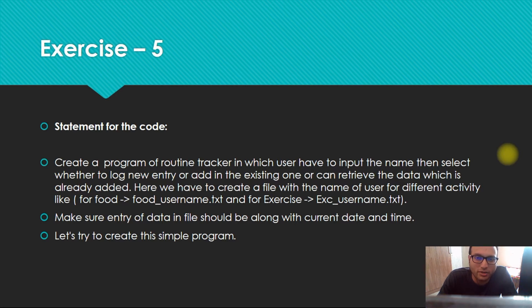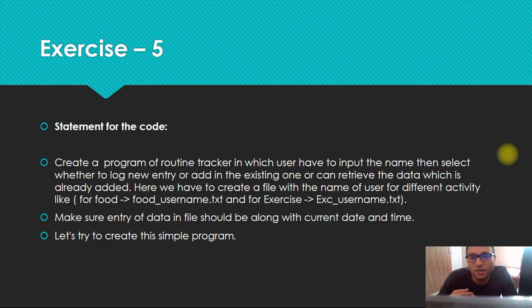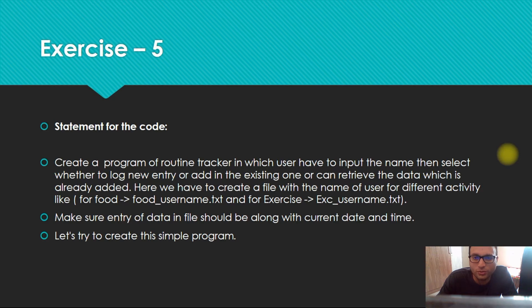Once the person puts in that entry and clicks enter, it's automatically saved in a txt file in the same directory where the code is. It automatically creates one txt file named with the activity and the username — for example, exercise_username — along with the current date, time, and whatever entry was given. Now take the second scenario: the same user visits the code again and wants to add a new entry in the food section. The procedure is the same, the same file is opened again, and the new entry with the latest timestamp is appended and saved.